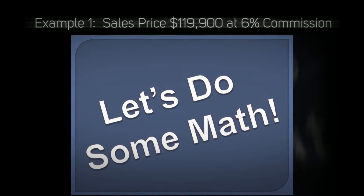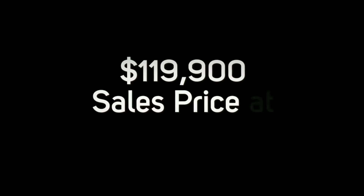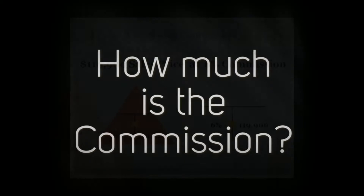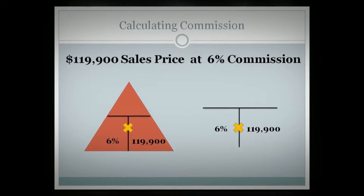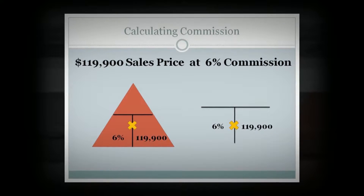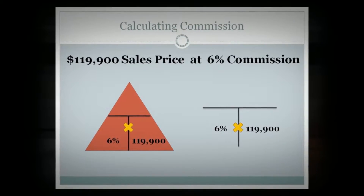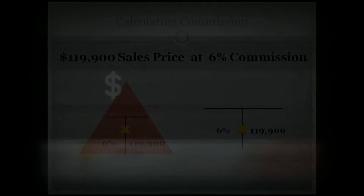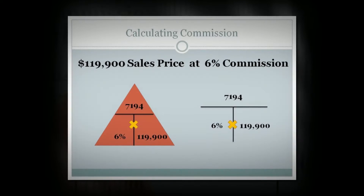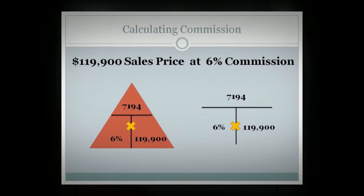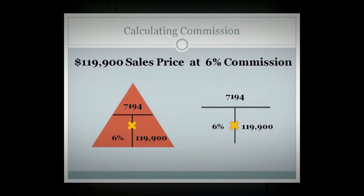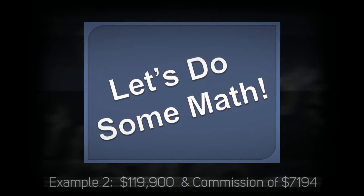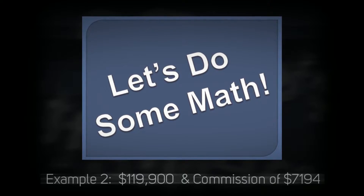Now let's do some math. Example one: you have a $119,900 sales price and a 6% commission rate — how much is the commission? To calculate that, you'll put the $119,900 sales price as the whole amount. You know that the commission is 6%, so you put it on the bottom left-hand side. You multiply $119,900 times 6% and that gives you the part or portion, which is $7,194.